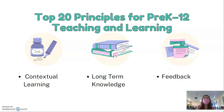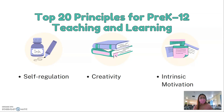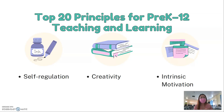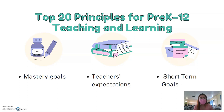Let's proceed to the other principles for pre-K to 12 teaching and learning. We have self-regulation — our students must be responsible and disciplined enough in terms of their own learning. They must also have their own creativity, and we must help them develop it. It is very important for us teachers to develop their intrinsic motivation because intrinsic motivation is far better than extrinsic motivation. Next is for their mastery goals — they have to master the learning competency first before proceeding to another level.